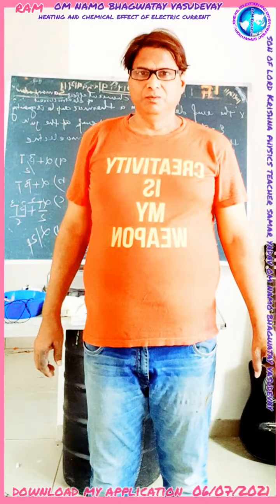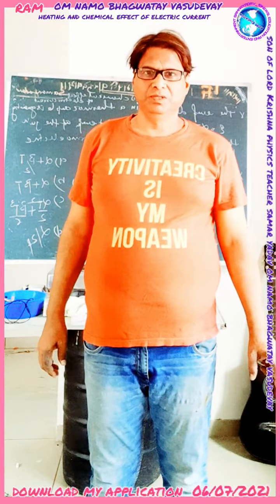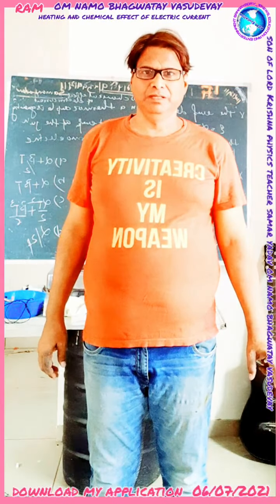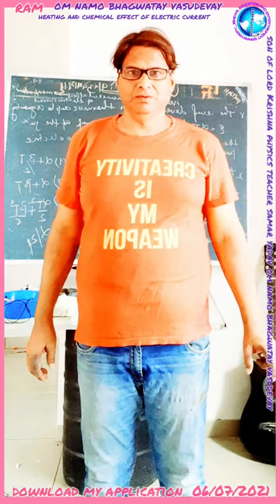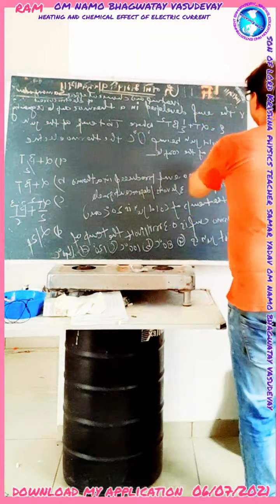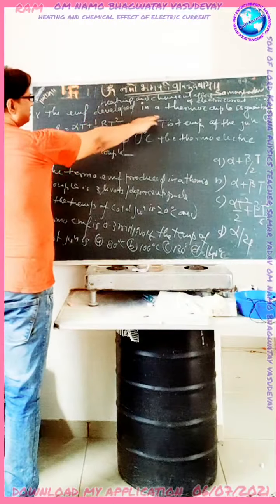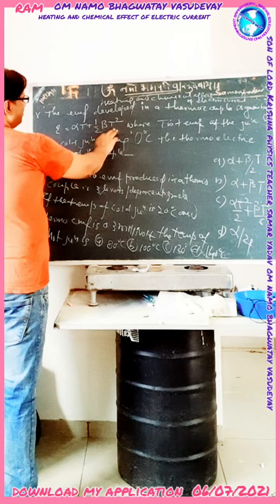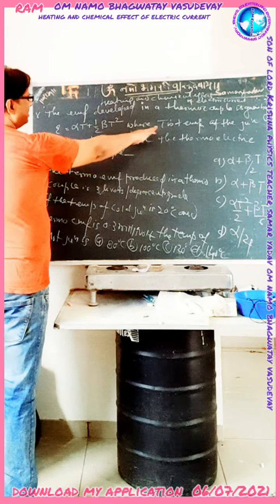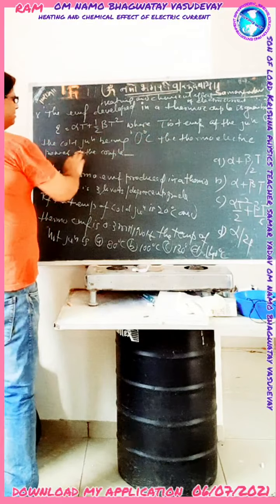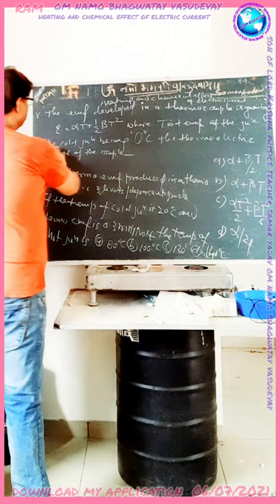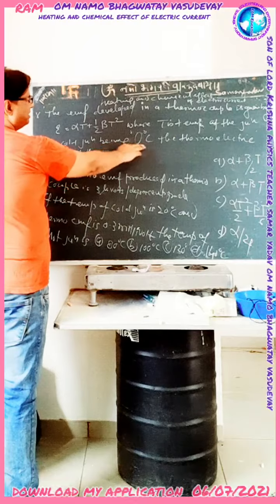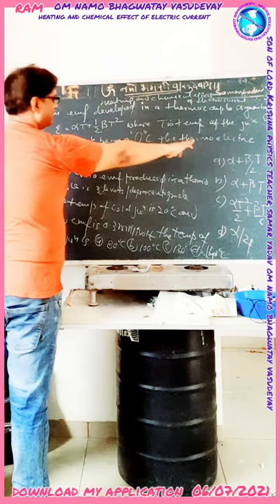Using this formula, and also we have to use the thermoelectric power: σ = dB/dt. We will solve the MCQ. The MCQ states: the EMF developed in the thermocouple is given by e = αt + ½βt², where t is the temperature of the junction, with the cold junction at 0 degrees centigrade.